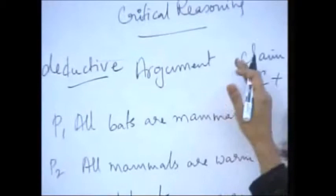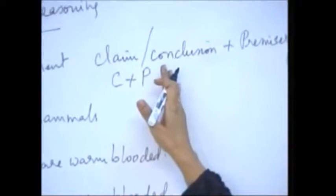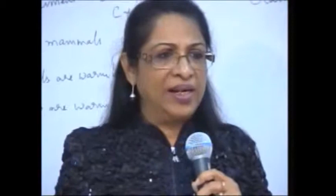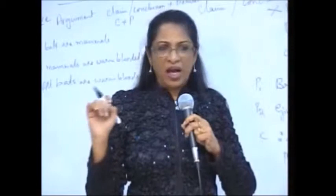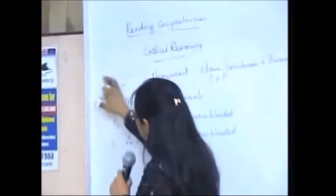These are called deductive arguments. Deductive arguments have only two components: the C plus the P — the claim or conclusion plus the premises. The arguments that come on critical reasoning, on GRE analytical writing, as well as many times in their short passages, are not so simple. The arguments that you get on GRE are mostly what we call inductive.